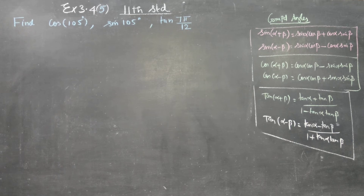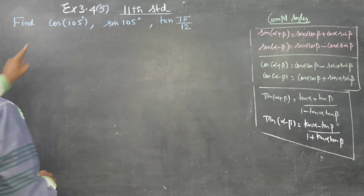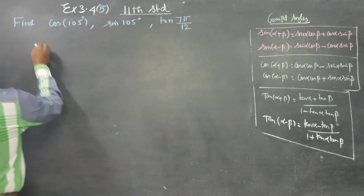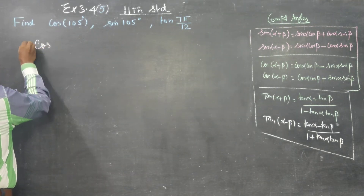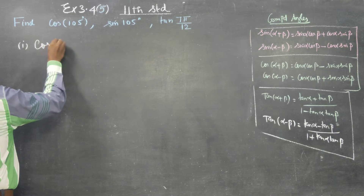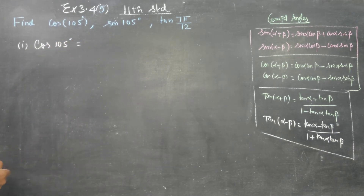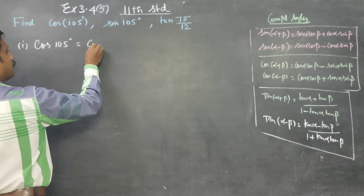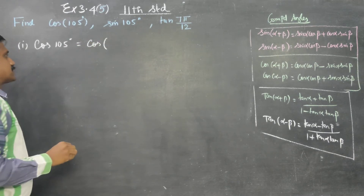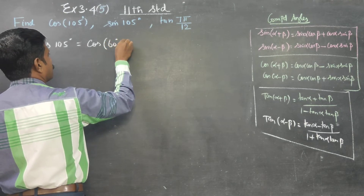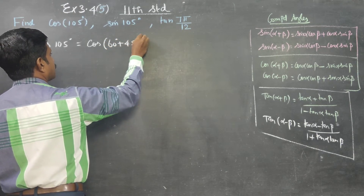Dear students, in exercise number 3.4, sum number 5, we need to find cos 105°. Cos 105° can be written as 60° plus 45°.